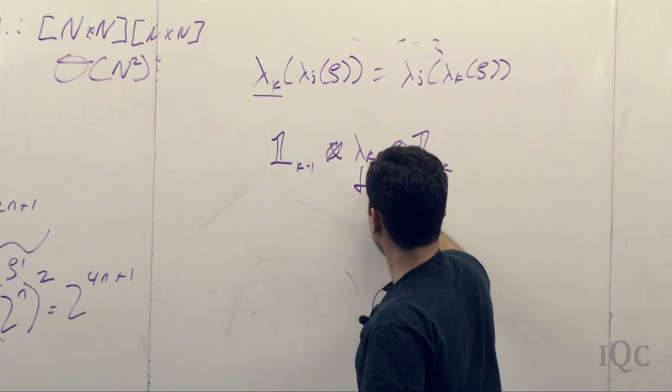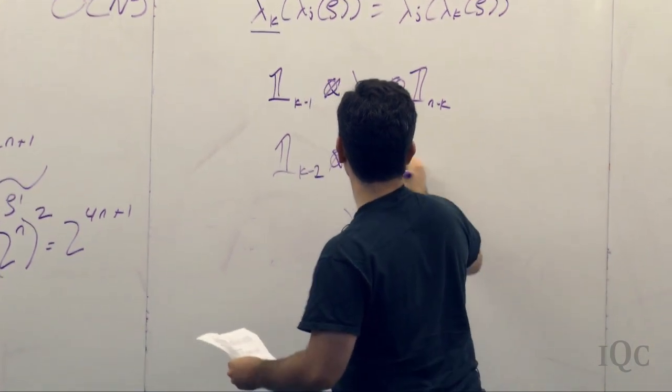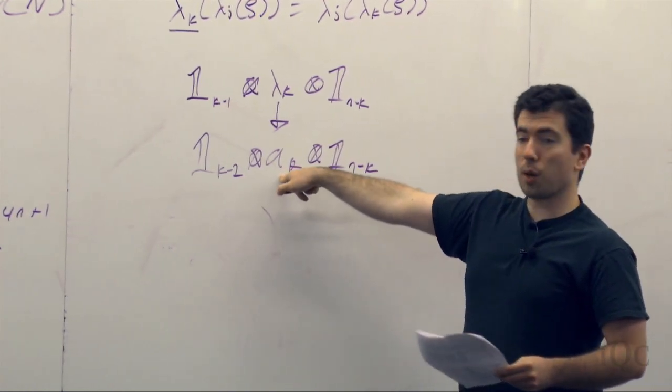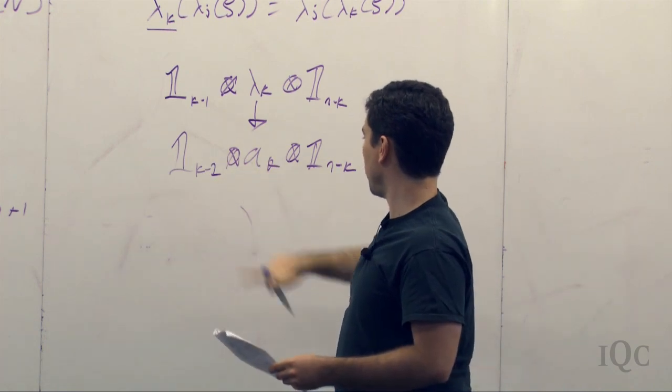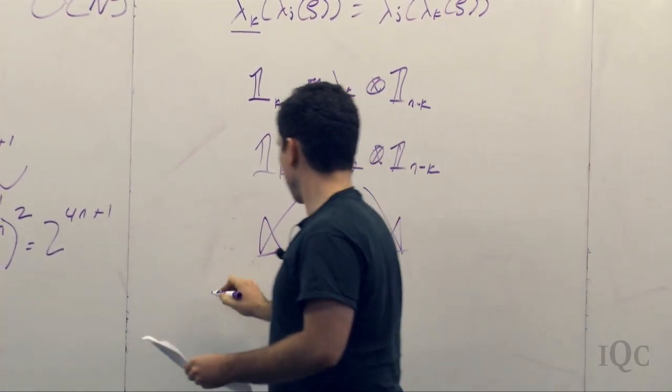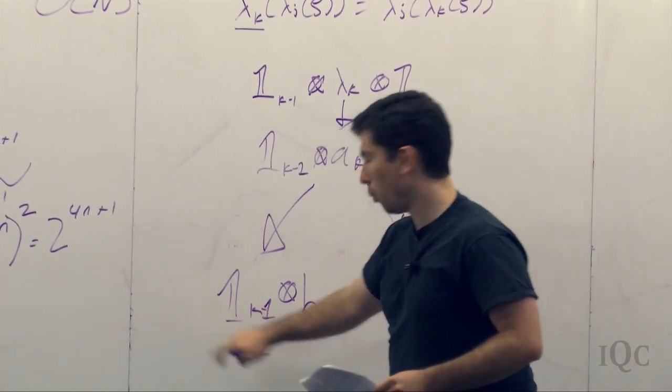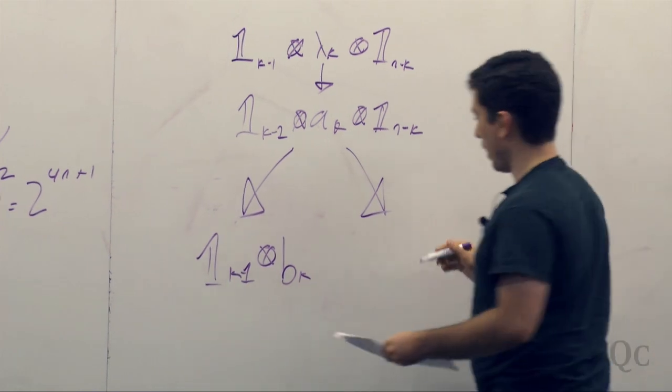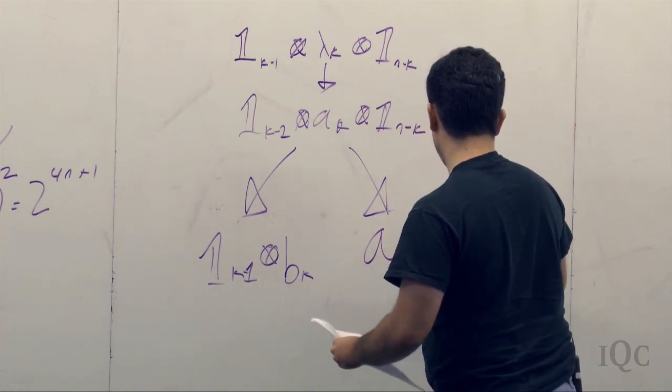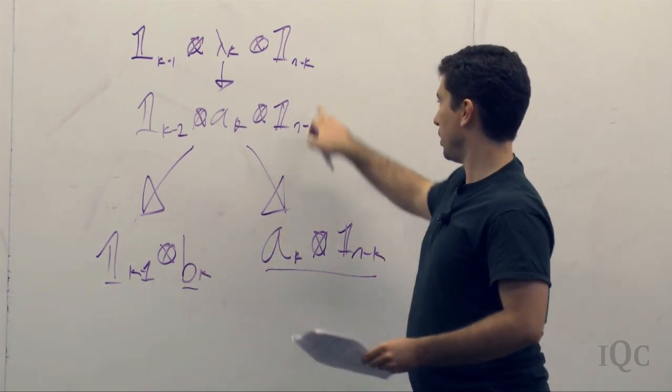Now I've convinced you that all I have to do is be able to apply one of these guys n times. What this looks like is the identity on k minus one qubits, tensored with lambda k, tensored with the identity on n minus k qubits. If I can apply this map n times, then I've solved the problem. Similarly, I can erase this lambda k and replace it with one of its Kraus operators. Identity k minus one times a_k, times identity n minus k. Because I only have to do this a maximum of four times, then I've solved the problem. So now what I'm going to do is show that there are two simpler problems, that if I can solve them, I can do this. This reduces to two problems, identity to the k minus one times b.